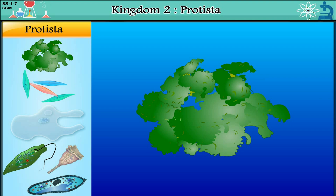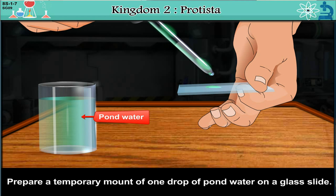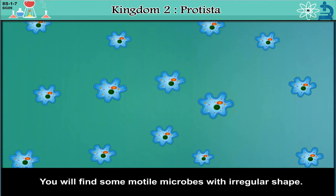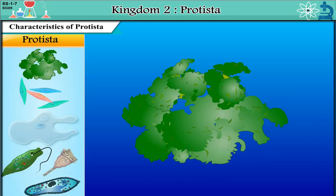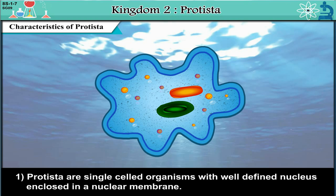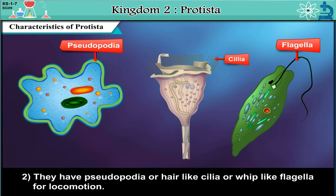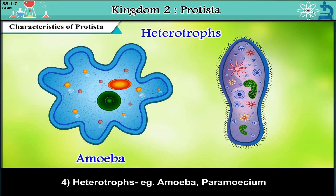Kingdom 2 — Protista. Activity: Prepare a temporary mount of one drop of pond water on a glass slide and observe it under low and high power of a microscope. You will find some motile microbes with irregular shape — these are amoebae. Characteristics of Protista: 1. Protista are single-celled organisms with a well-defined nucleus enclosed in a nuclear membrane. 2. They have pseudopodia, hair-like cilia, or whip-like flagella for locomotion. 3. Autotrophs include Euglena and Volvox, which contain chloroplasts. 4. Heterotrophs include Amoeba and Paramecium.